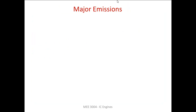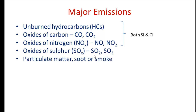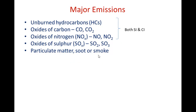There are basically three major emissions from engines: unburned hydrocarbon, oxides of carbon, and oxides of nitrogen. These emissions are found in both SI and CI engines. Apart from these, there are two more emissions found in CI engines alone: oxides of sulfur and particulate matter, also known as soot or smoke.